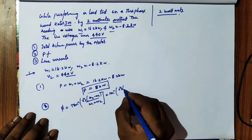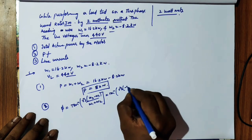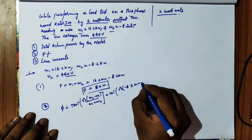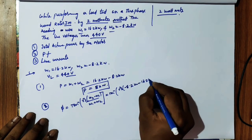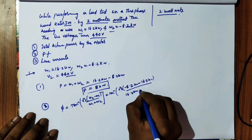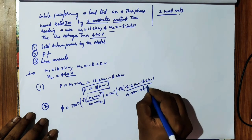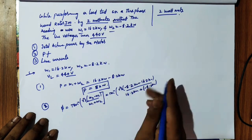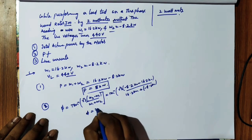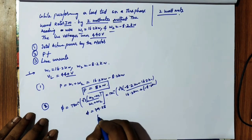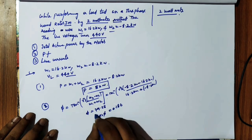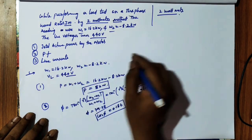Substituting the values: W2 = -8.2 kilowatts, W1 = 16.2 kilowatts. So phi = tan⁻¹ of root 3 times (-8.2 - 16.2) divided by (16.2 + (-8.2)). After substituting all values, phi = 79.28°, and the power factor cos(phi) = 0.186 lagging.